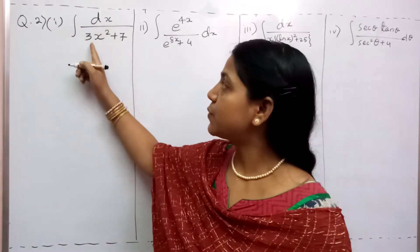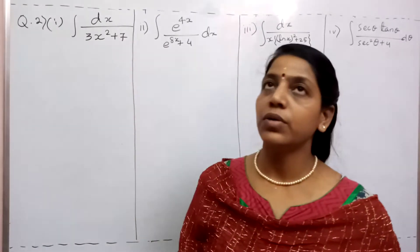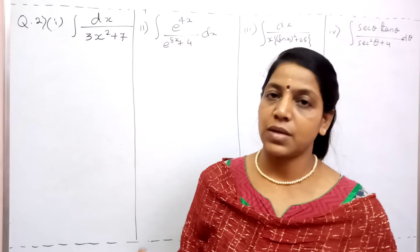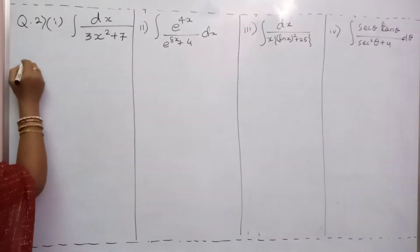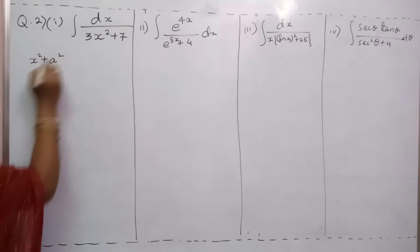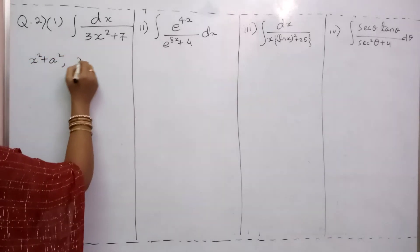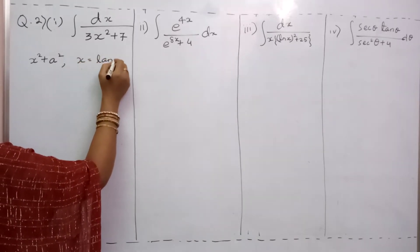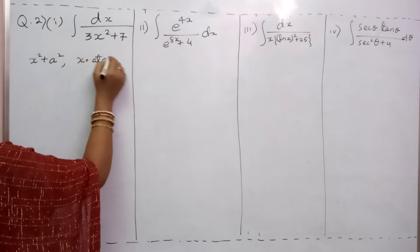The first bit is integration of dx by 3x² plus 7. I already told you in indefinite integration under trigonometric substitution: whenever you find your integration in the format x² plus a², in such case you have to take x equal to a tan θ.